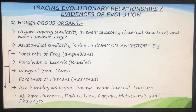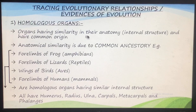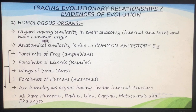One of the evidences which we can say that evolution is taking place are the homologous organs. The homologous organs are the organs which have similar anatomy - anatomy means internal structure - and they have a common origin. Their origin is common and their anatomy is also the same, but they perform different functions. So organs having similarity in their internal structure and common origin but performing different functions are known as homologous organs.